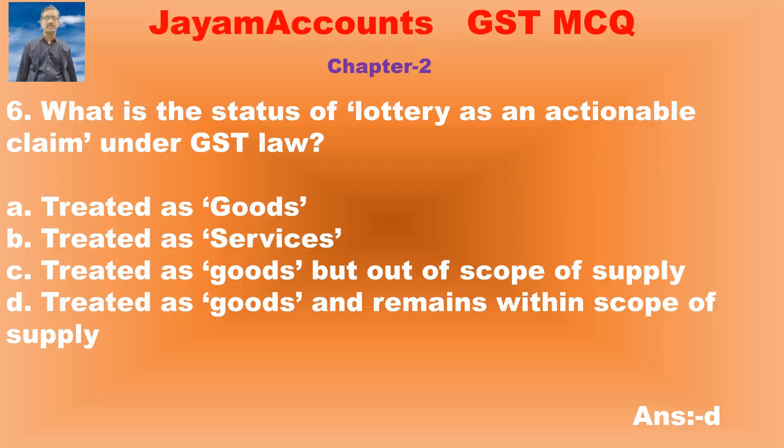What is the status of lottery as an actionable claim under GST law? Option A: treated as goods. Option B: treated as services. Option C: treated as goods but out of scope of supply. Option D: treated as goods and remains within scope of supply.